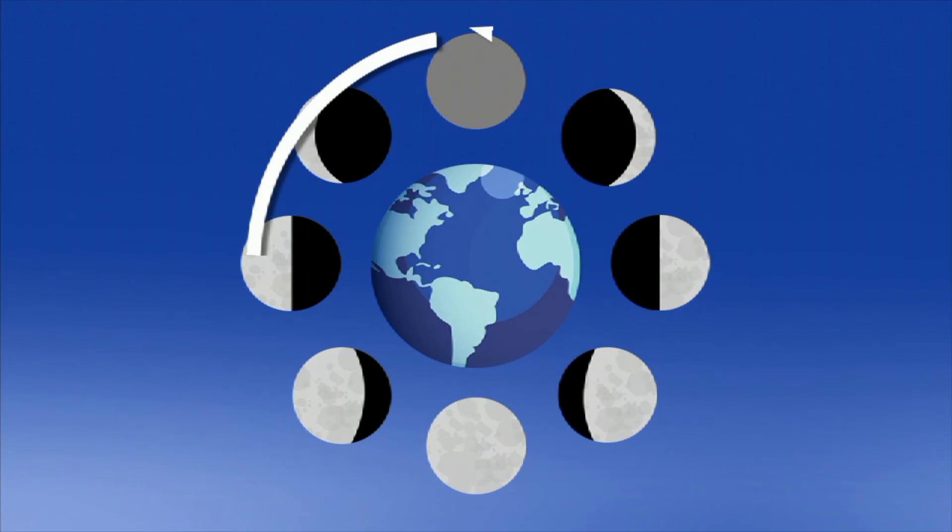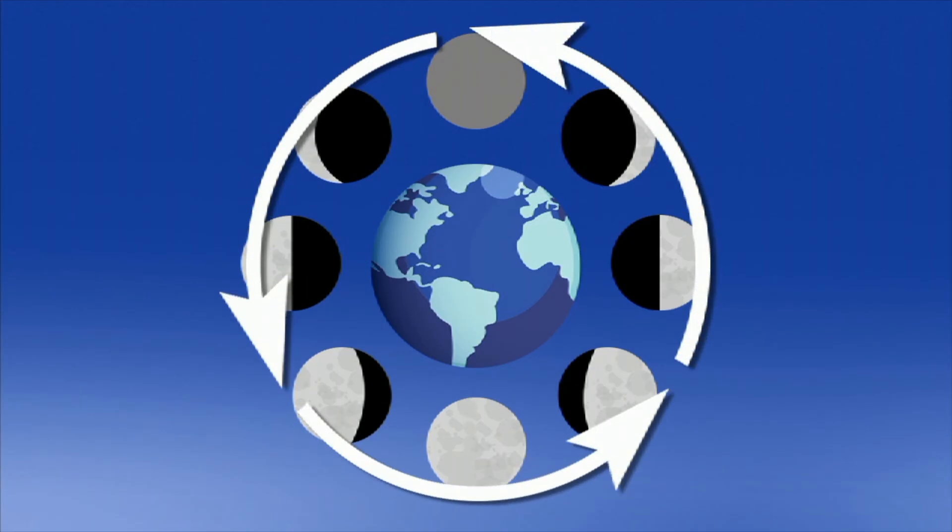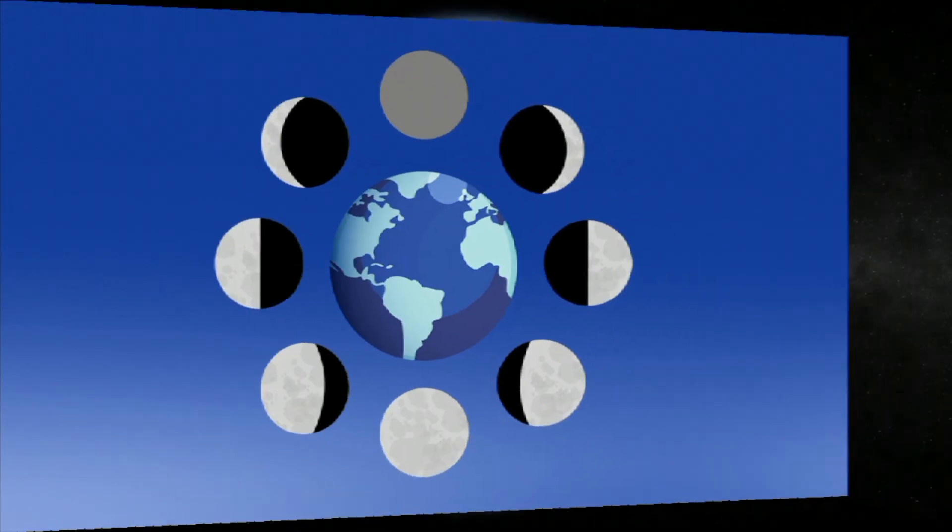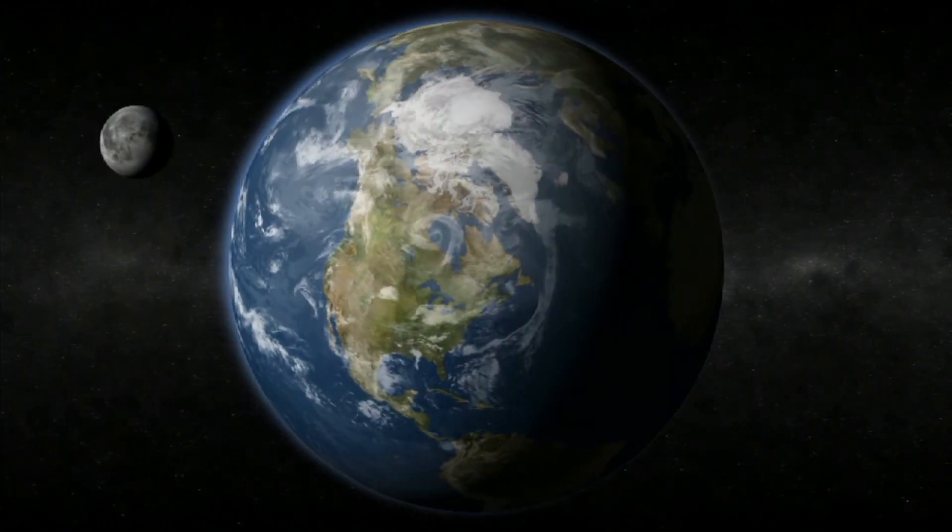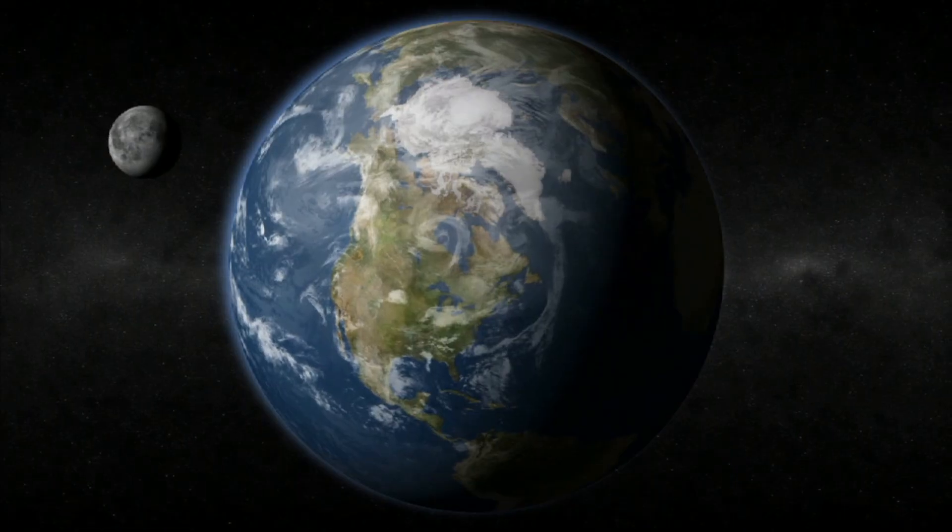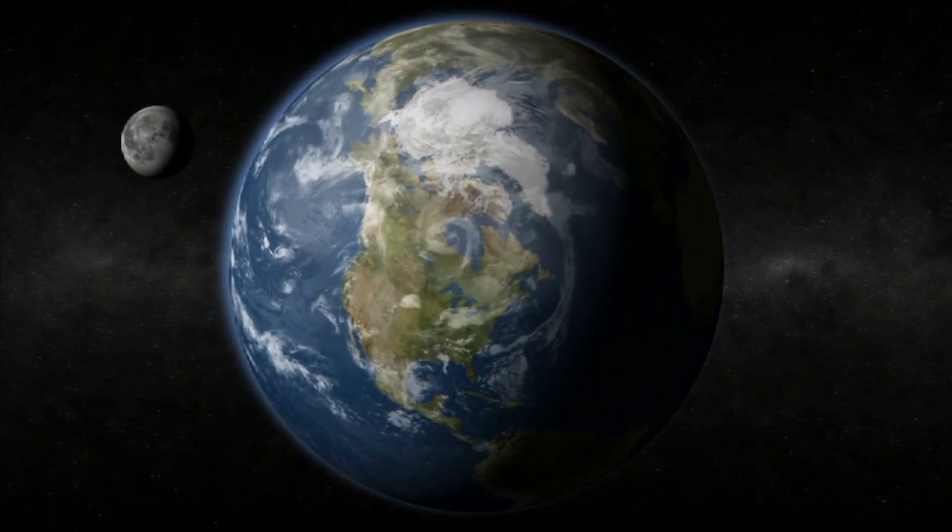Now that you better understand the different cycles of the Moon, think about this. In what cycle does the Moon reflect the most light on the Earth? In what cycle does it reflect the least?